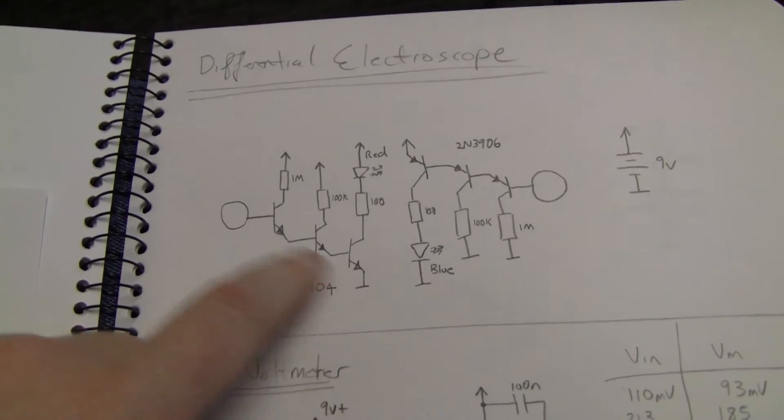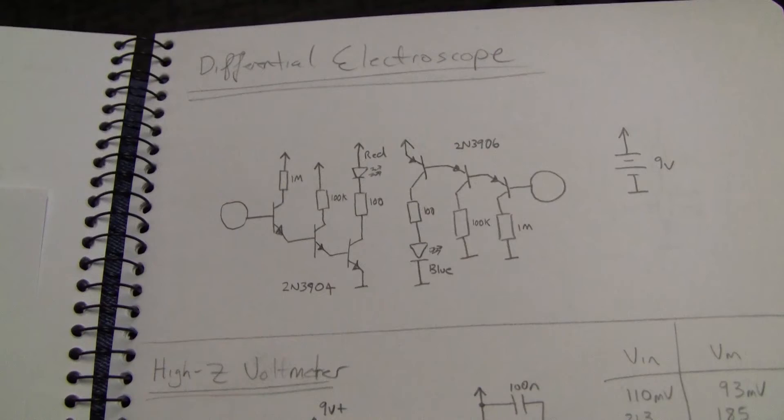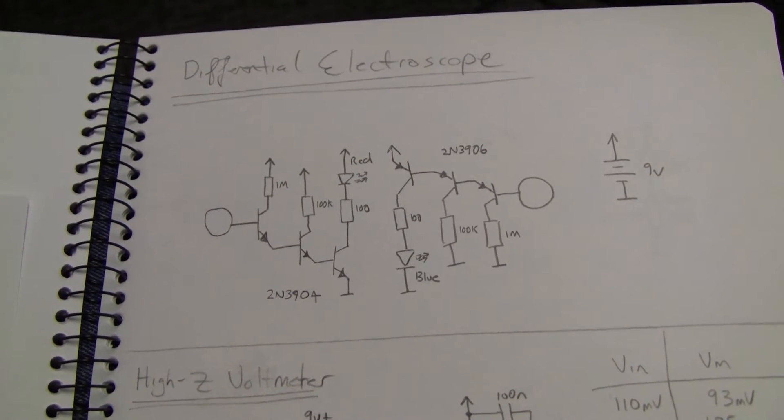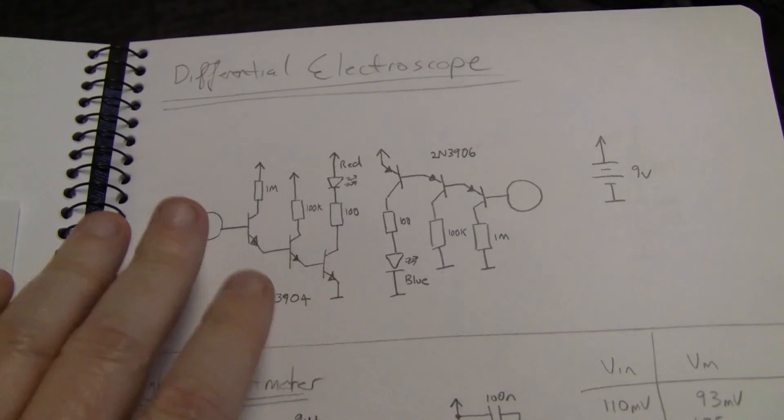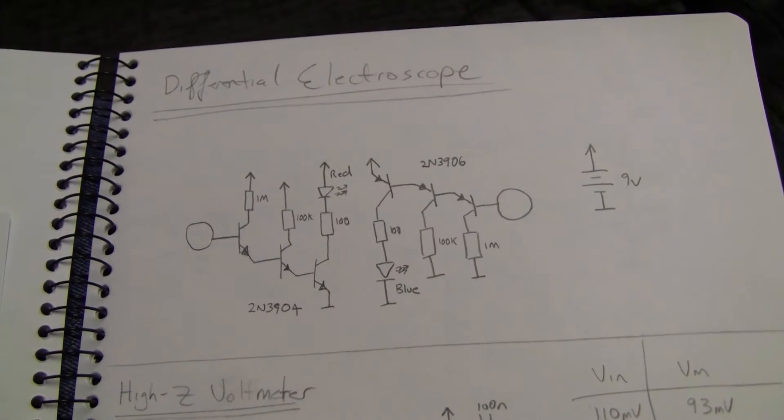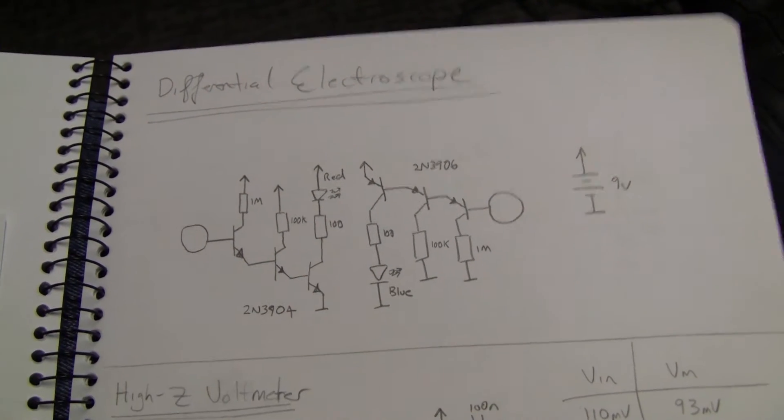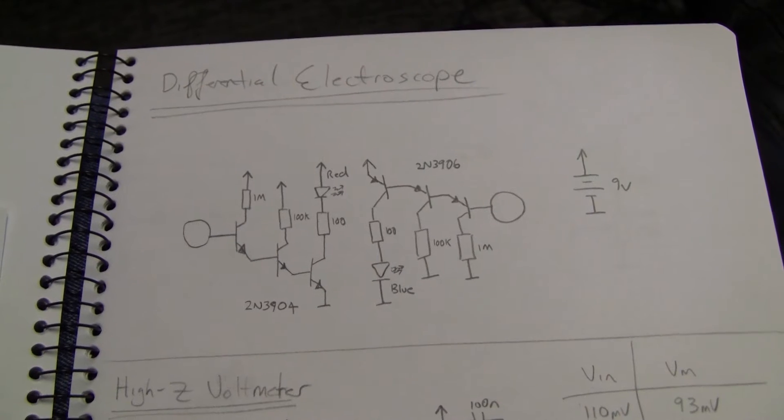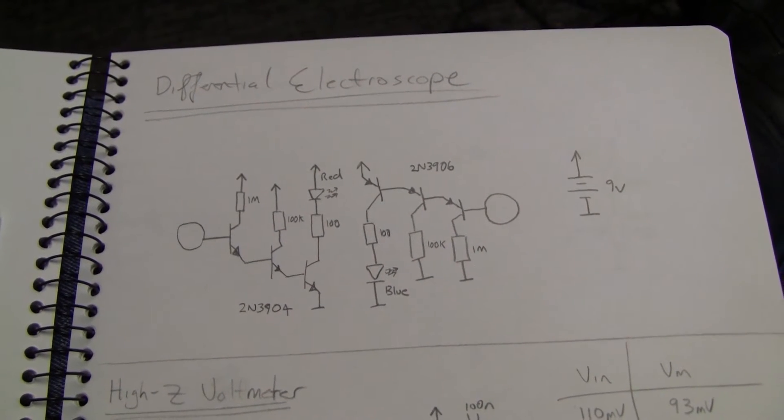The good thing about using BJTs is it's actually quite robust. I mean, naturally a FET would be another way to do it. But BJTs, because they're a junction device, they don't have any dielectrics to blow up. You can still blow them up by zapping them really hard, but so far it hasn't been a problem.